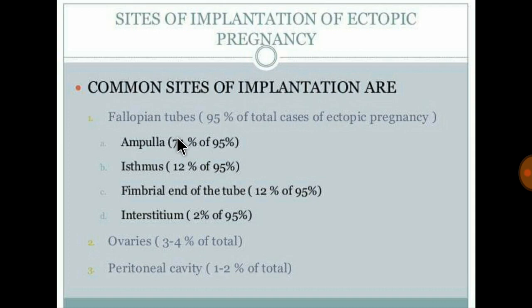Within the fallopian tube, the mnemonic is: A4 for ampulla, I4 for isthmus, F4 for fimbrial end of tube, and I4 for interstitium. Note it is 'I5' — not Wi-Fi — for remembering the fallopian tube segments.